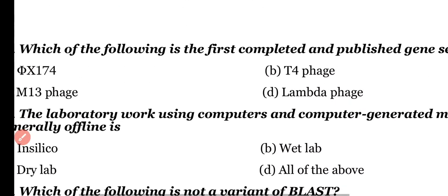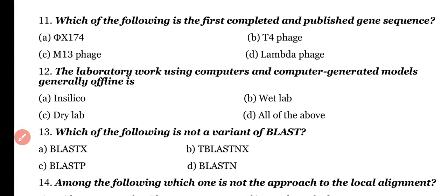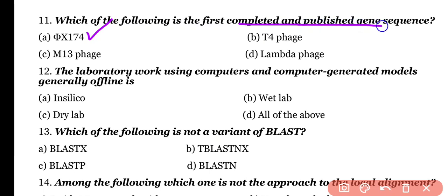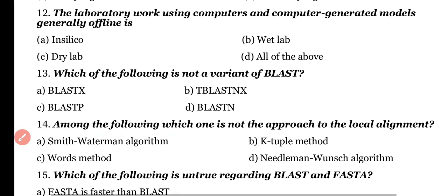Question number 11. Which of the following is the first completed and published gene sequence? Options: Phi-174, T4 phage, M13 phage, lambda phage. Correct answer is option A. Phi-174 virus was the first organism whose genome was completely sequenced and published.